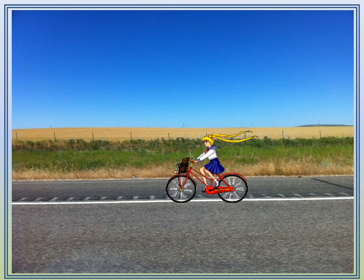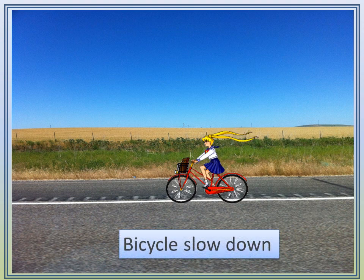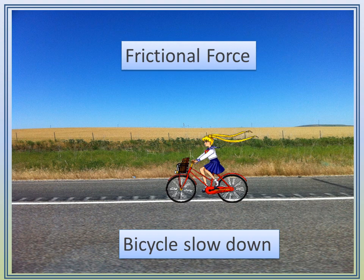We see this young girl riding the bicycle and understand that as she stopped pedaling, the bicycle starts slowing down. Here the bicycle slows down as the frictional force opposes the motion of the bicycle. This frictional force slows things down or prevents things from moving.